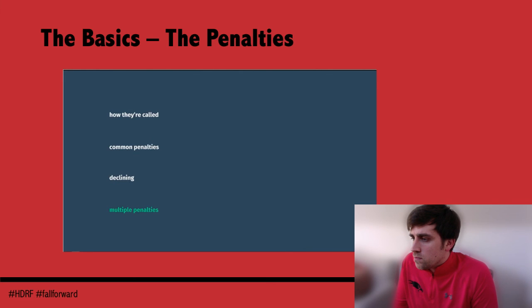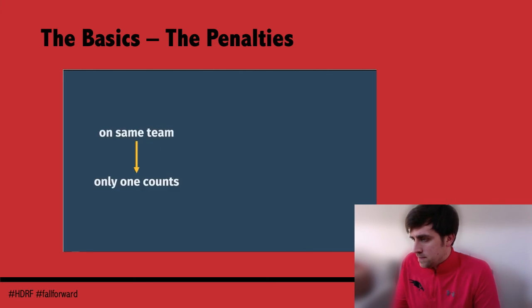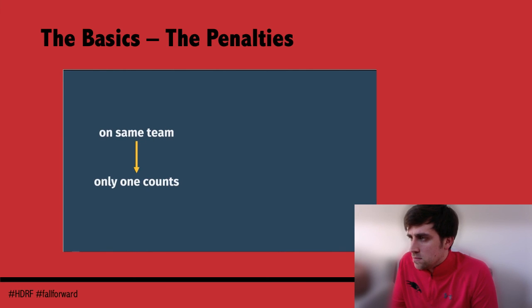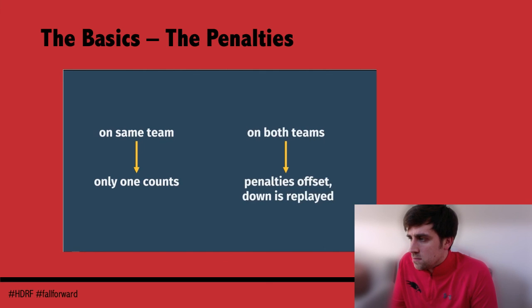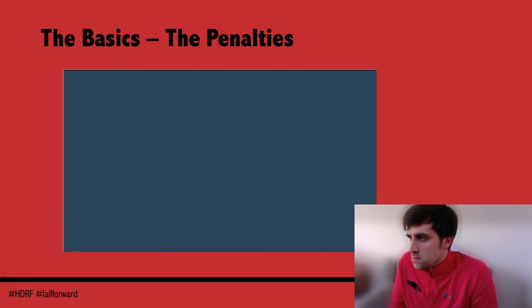If there are multiple penalties on the same play, and both are on the same team, generally only the one that benefits the other team the most is applied — they are not added together. If there are penalties on both teams, in almost all cases the penalties offset, meaning they cancel each other out and it's a do-over from the previous down. As always, the referee will explain everything so everyone gets back on the same page.